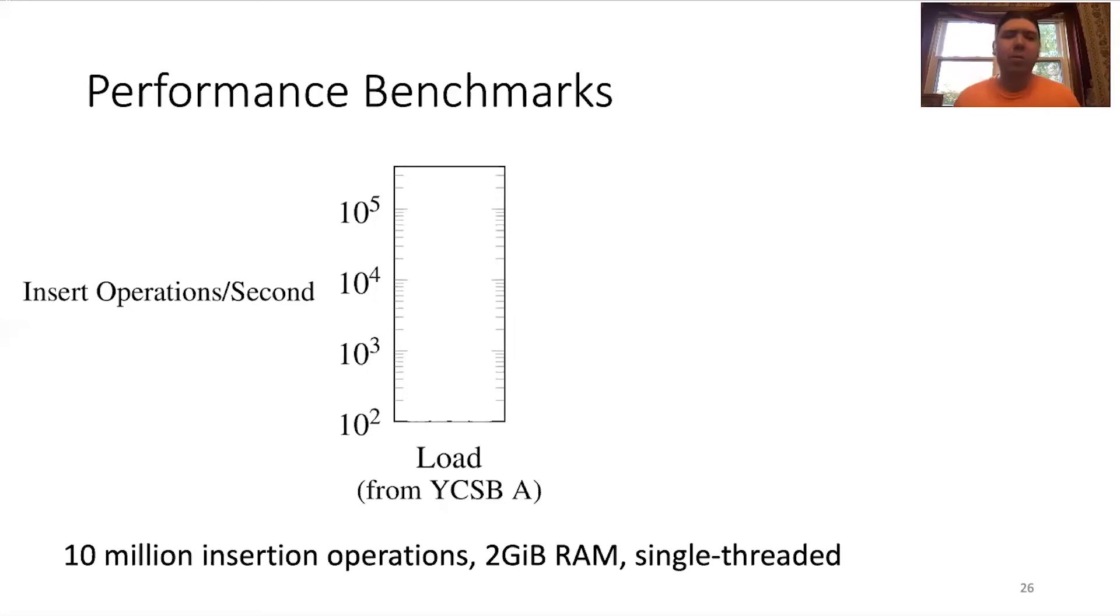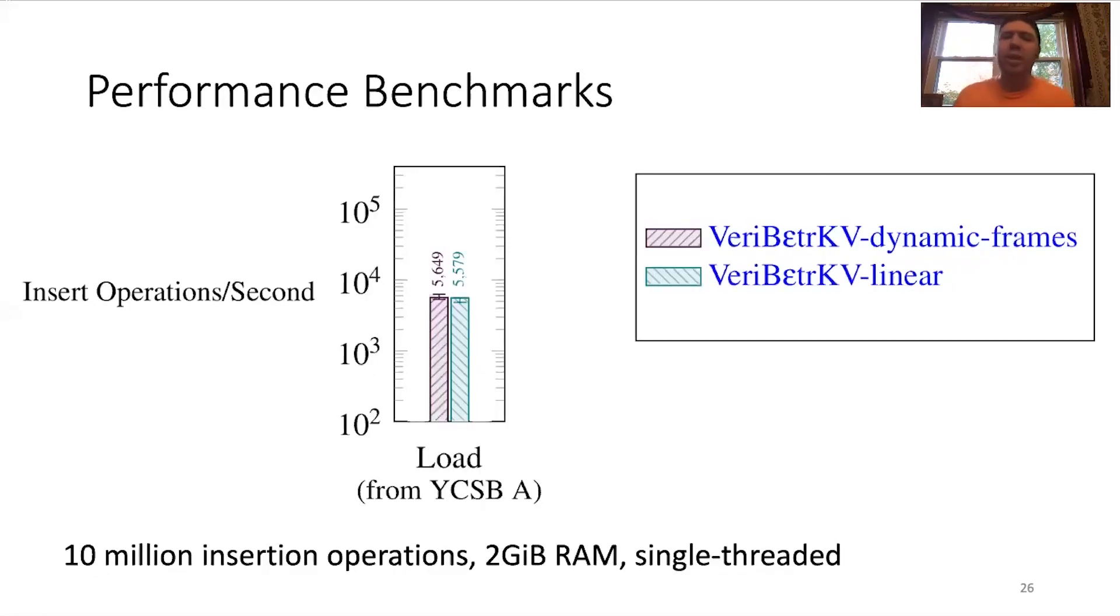Now, of course, we did some performance benchmarks using the YCSB benchmark suite for key-value stores. For example, here we have the load phase from one of the benchmarks measuring the insert operations per second. We compared both the dynamic frames version and the linear version of our code base. And we didn't really find any measurable difference. Both achieving over 5,000 operations per second for our benchmark. We also compared to some state-of-the-art unverified key-value stores like BerkeleyDB, which uses a B-tree. So, VeriBetrKV's B-epsilon trees are supposed to be write optimized. So, we found that it was faster as expected.